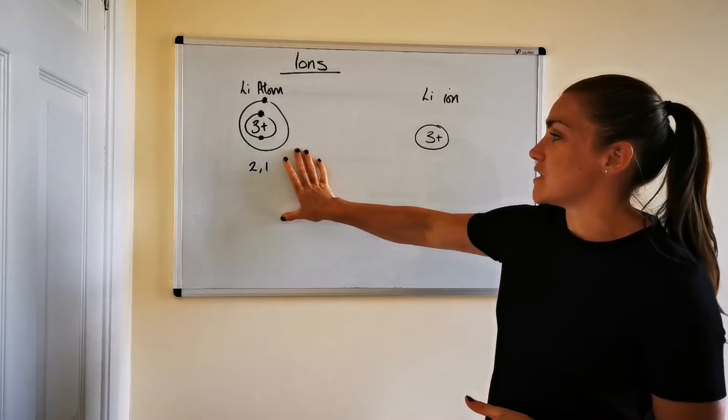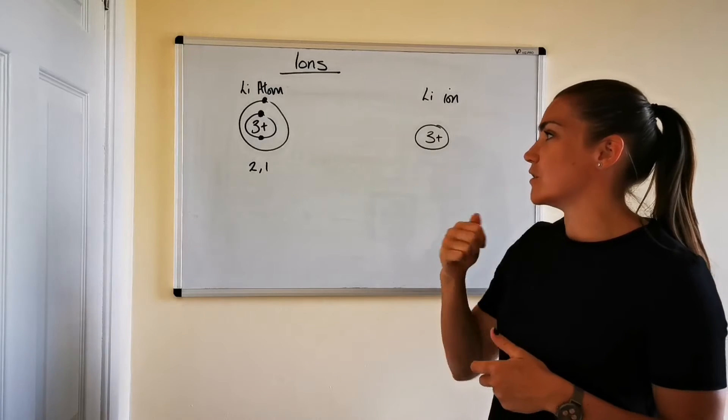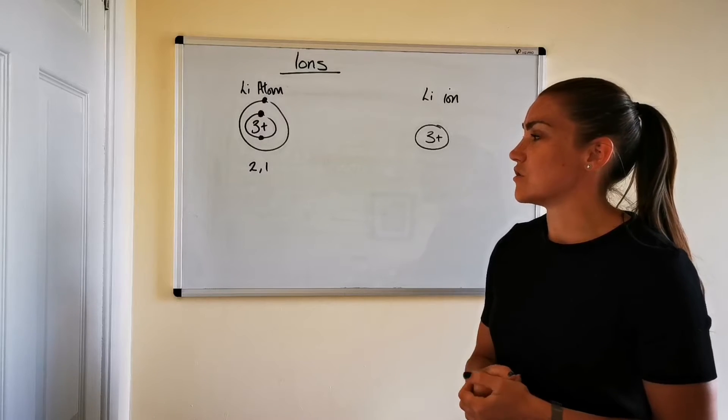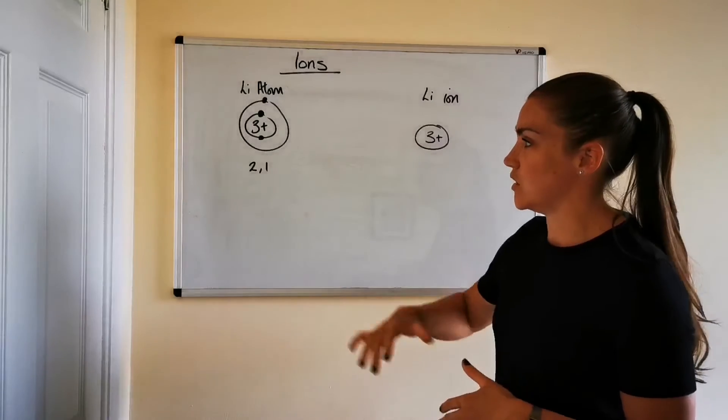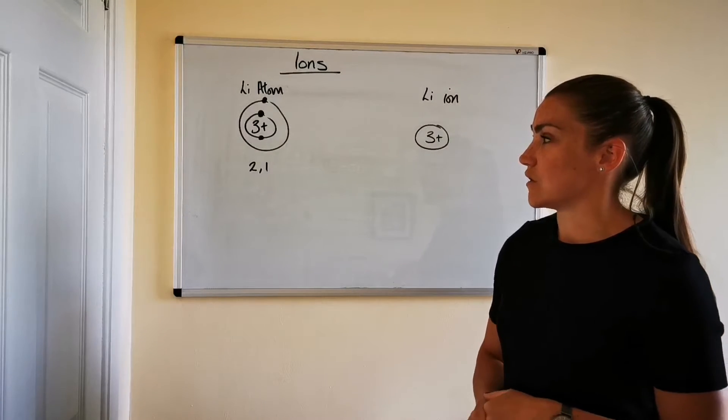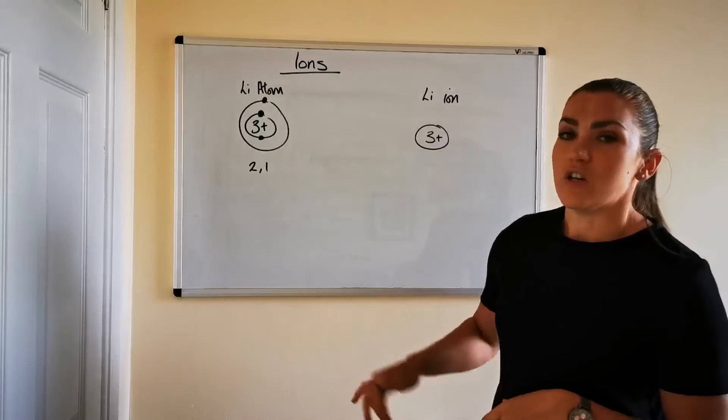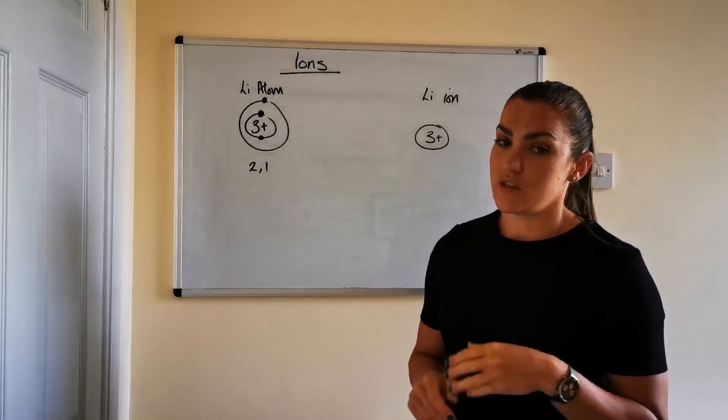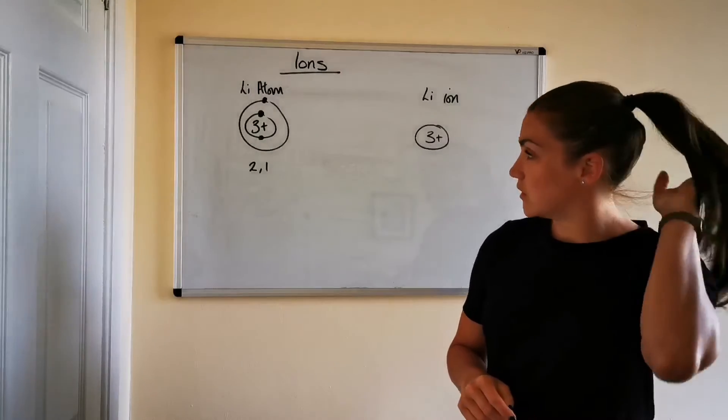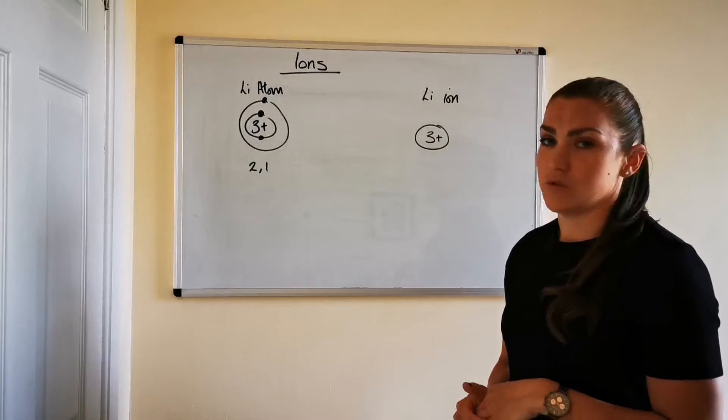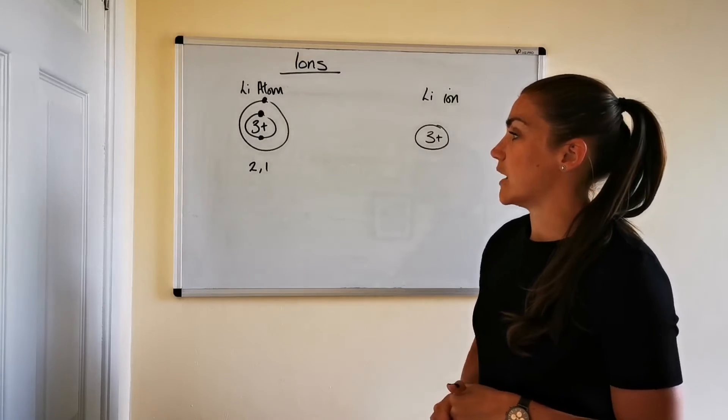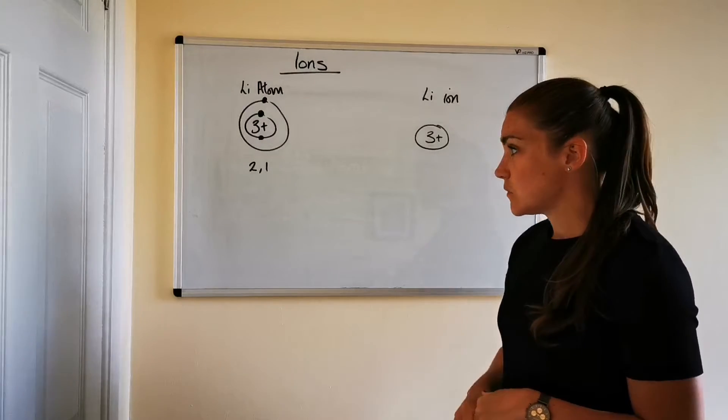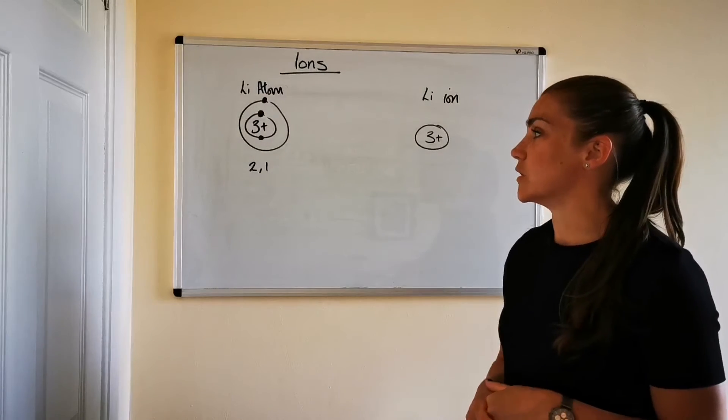So this here I've drawn a lithium atom. Now lithium as an atom it's not stable because it doesn't have a full outer shell of electrons. It's got one electron in its outer electron shell. Remember the electron arrangements are shown to you in the data booklet so you don't need to remember them off by heart. You would just look them up if you were doing any questions on atoms or ions in relation to electron arrangement. So the electron arrangement for lithium is 2,1.